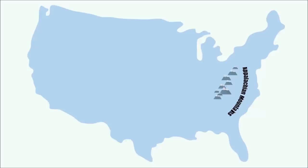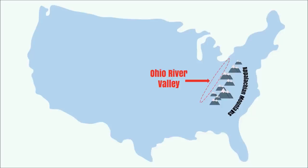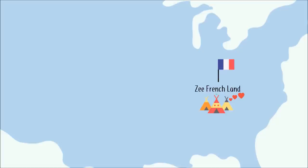The colonies were starting to get a little too big for themselves and wanted to settle further west, specifically in an area known as the Ohio River Valley — which would have been great if someone wasn't already there. The French claimed that this land was theirs, having developed great relationships with the Native Americans in that area and capitalizing on a lucrative fur trade.